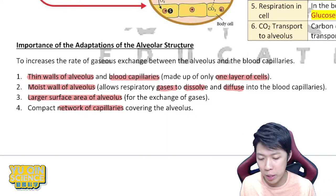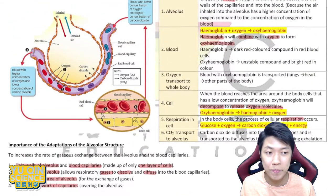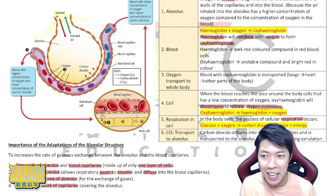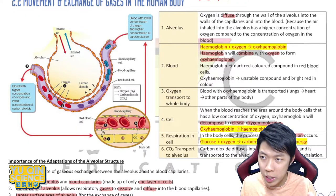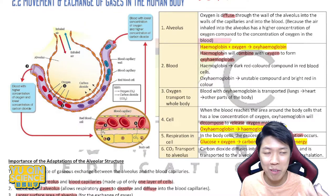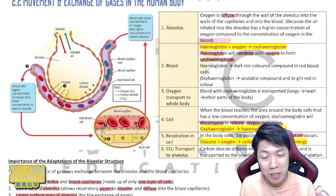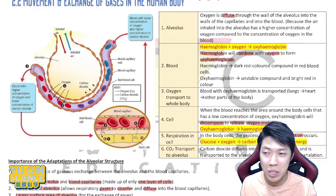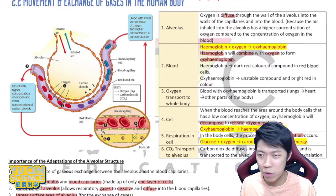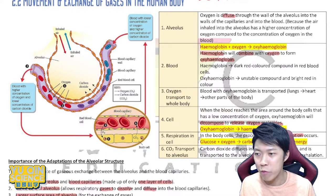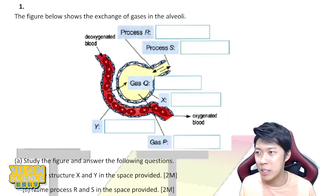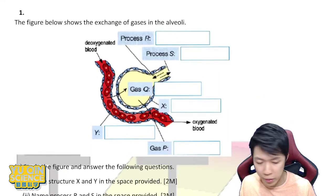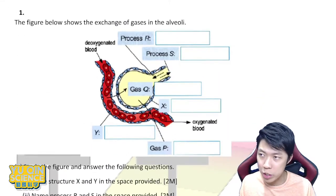These four factors — thin wall, moist wall, large surface area, and network of blood capillaries — make gaseous exchange efficient. Materials are available for you to download in the description box below. I have some exercises to go through — I'll do one with you and leave another question for you to try at home.